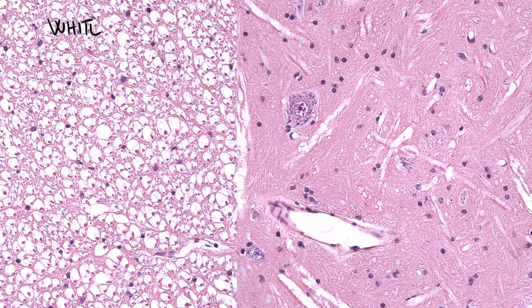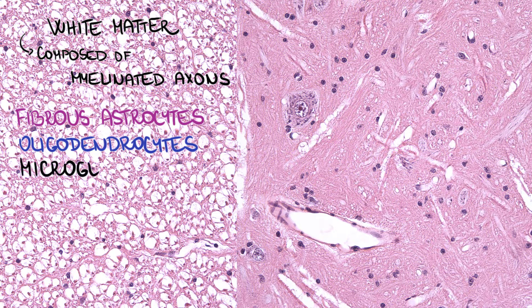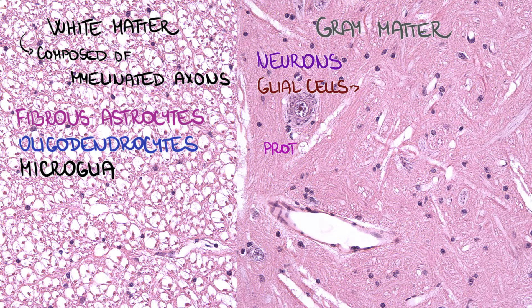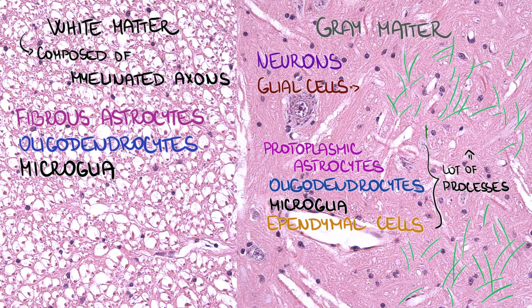Just a brief recap: white matter is composed of myelinated axons, and we can find glial cells such as fibrous astrocytes, oligodendrocytes, and microglia there. Gray matter contains neurons and glial cells such as protoplasmic astrocytes, oligodendrocytes, microglia, and ependymal cells. We differentiate glial cells based on their nuclei, but they have a lot of processes. These processes, together with dendrites and axons, create a meshwork in gray matter called neuropil.